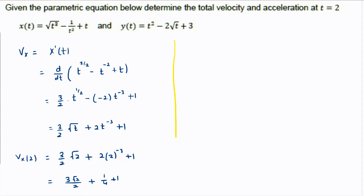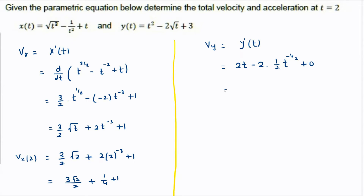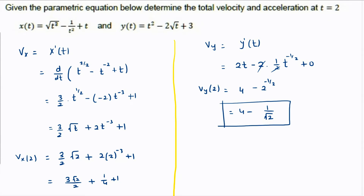Now let's find Vy. Vy is y prime of t, which equals 2t minus 2 times 1/2 times t raised to minus 1/2, plus 0. So Vy at t equal to 2 will be 4, and those terms simplify, minus 2 raised to minus 1/2, giving Vy(2) = 4 minus 1 over root 2.